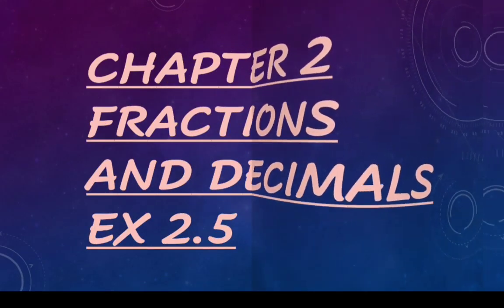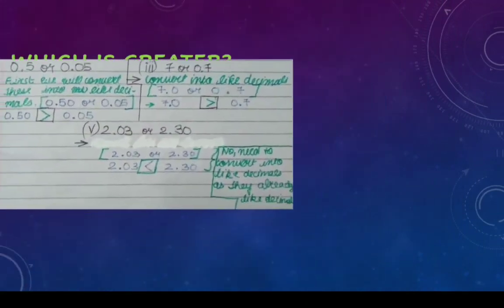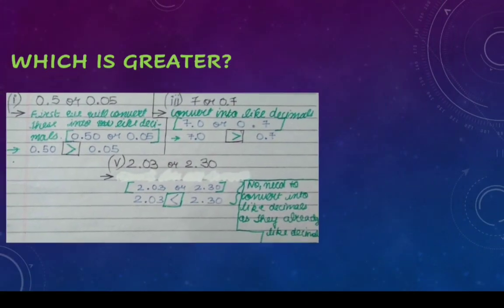The first question is: which is greater - 0.5 or 0.05? These are unlike decimals. We are going to convert them to like decimals, so 0.5 becomes 0.50.